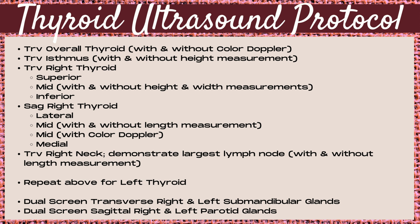Then you want to repeat all of the above for the left thyroid and the left neck. After completing the thyroid protocol, take dual screen images — first of the transverse right and left submandibular glands, and next a dual screen image of the sagittal right and left parotid glands. And this completes the thyroid protocol.